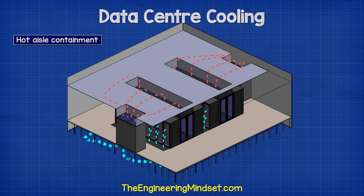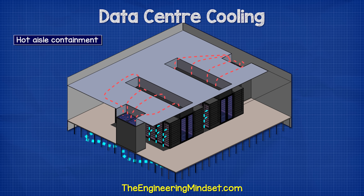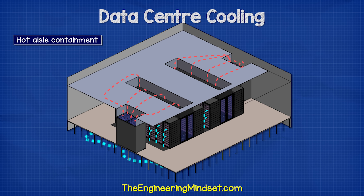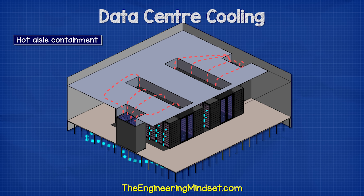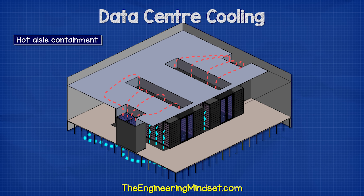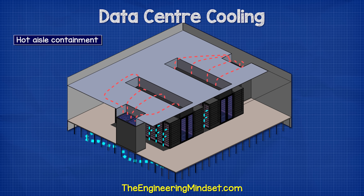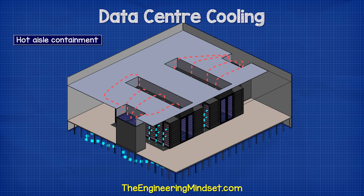Newer data centers will likely use hot aisle containment. In this design, cold air fills the room and the hot exhaust air is contained and separated with a ceiling, and this air is then drawn back into the CRAC units.